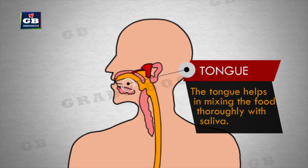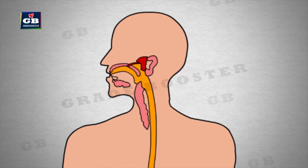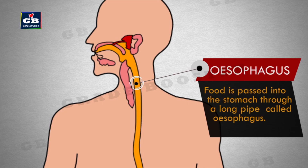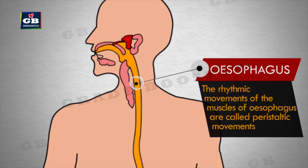Tongue. The muscles of the esophagus produce movements called peristaltic movements.